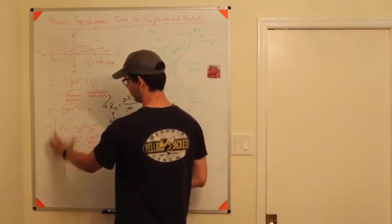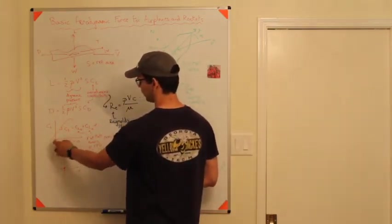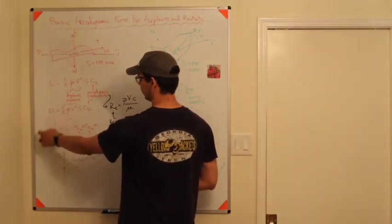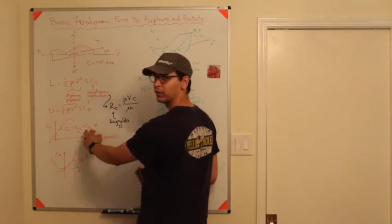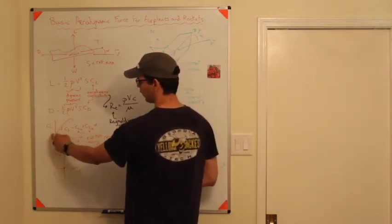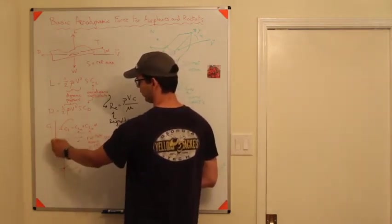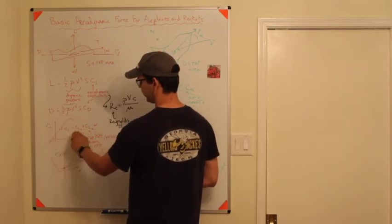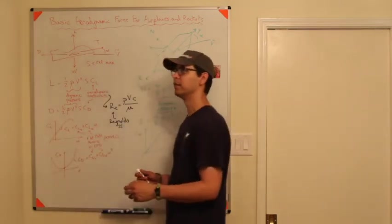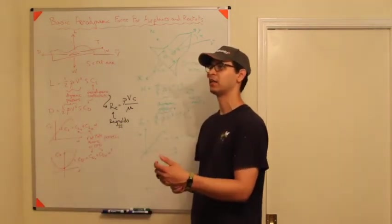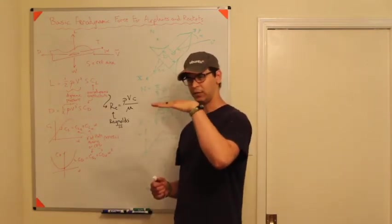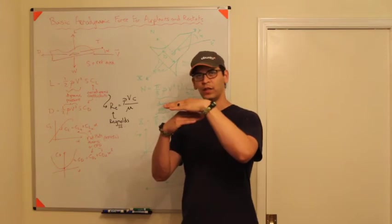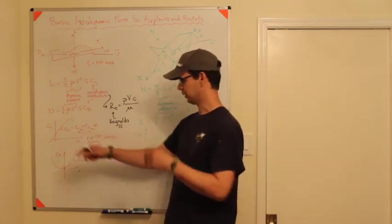Typically, aerodynamic coefficients look like this. So the lift curve slope looks like this, where angle of attack is on the x-axis, lift is on the y-axis. The slope of this is typically called CL alpha, which is the lift curve slope. And where it crosses the y-axis is called the zero angle of attack lift coefficient. So it basically means if you're flying level or if you're taking off, how much lift are you going to get?